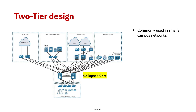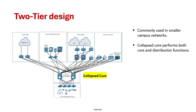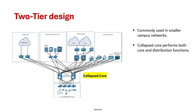The collapsed core layer performs both core and distribution functions together as it connects key blocks like WAN edge, which provides connectivity to remote sites and cloud providers, the data center and server blocks which host business-critical services, the internet edge which manages internet and VPN access, and the network services block which houses services like WLCs and Cisco ISE.